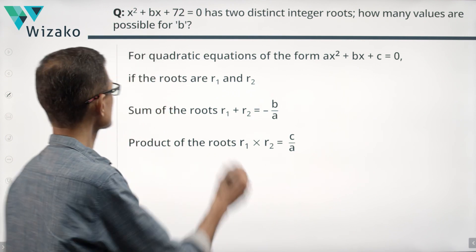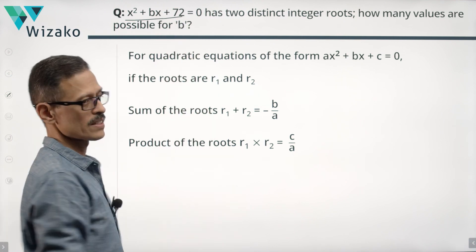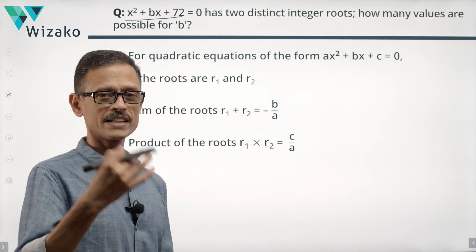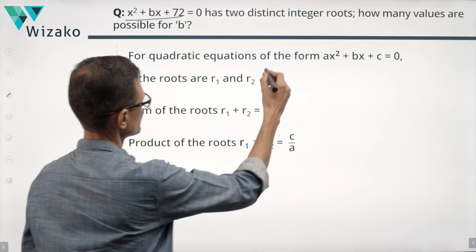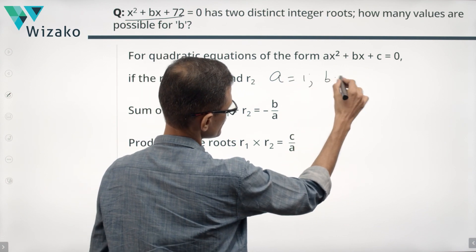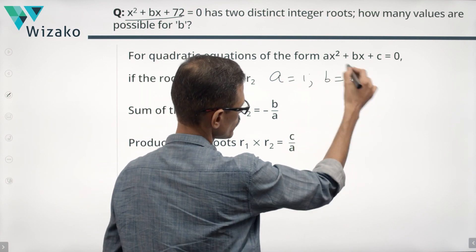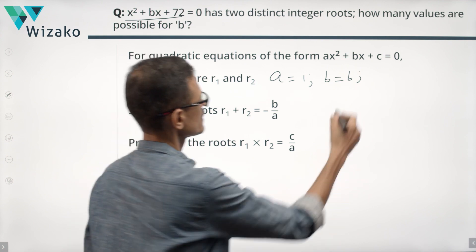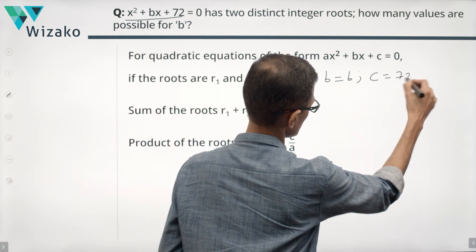The equation given to us is X squared plus BX plus 72. Let's quickly draw down what is A, what is B, what is C in this context. In this context, A is equal to 1, B is the same B, no change at all. We are trying to find out how many values can B take and C in our instance is equal to 72.